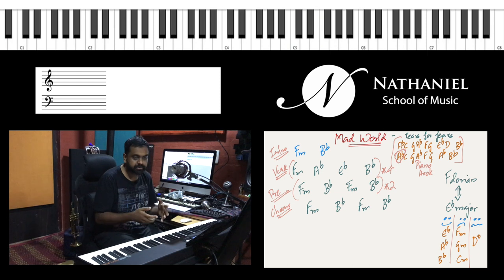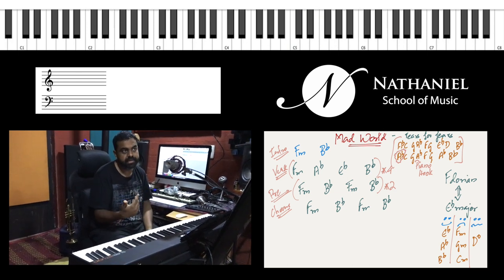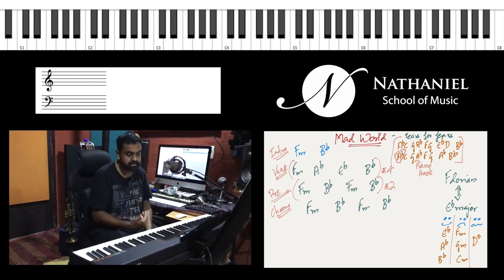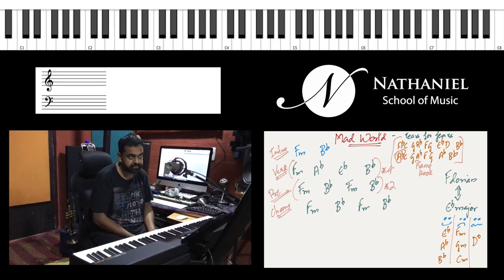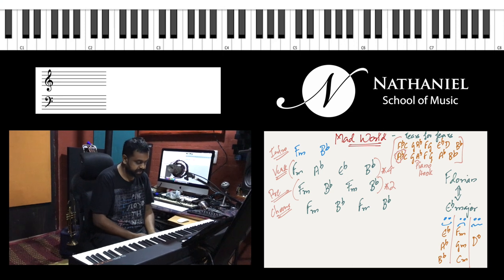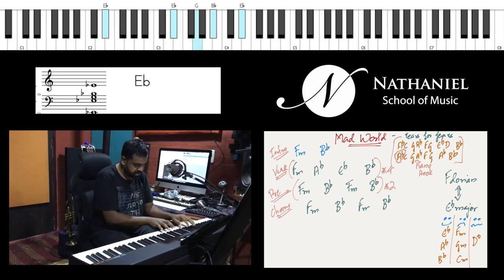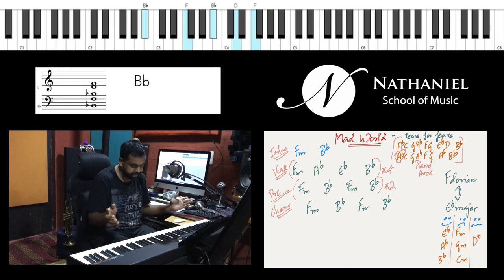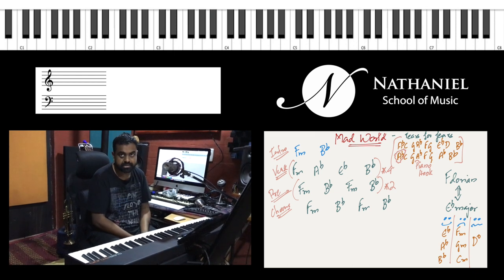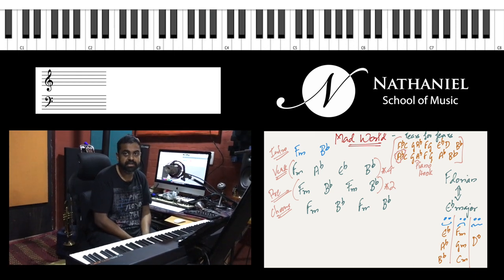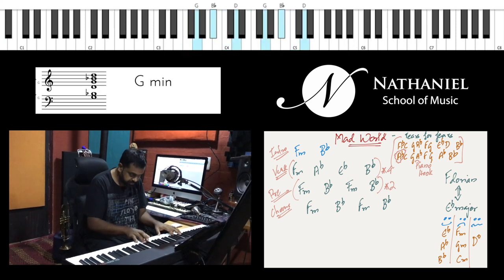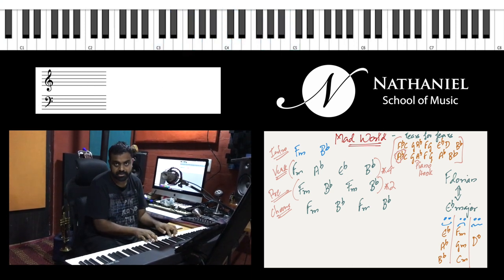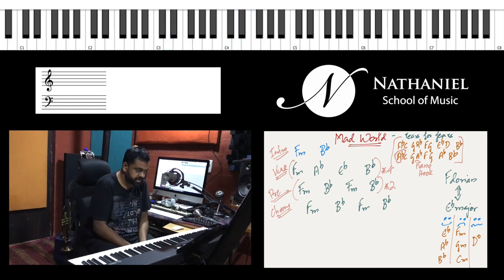So to form F dorian, all you need to know is E flat major starting from the second mode and the chords of the scale remain the same. You'll have E flat, A flat and B flat being the major chords. You'll have F minor, G minor and C minor being the minor chords, and then the diminished which is D diminished if ever you use it.